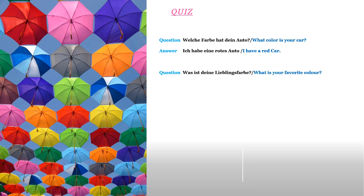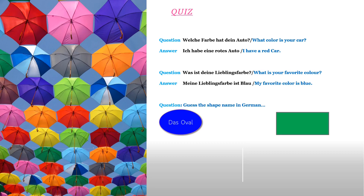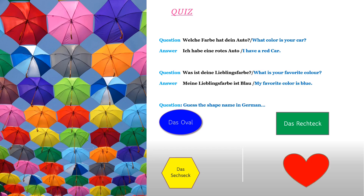Question 2: Was ist deine Lieblingsfarbe? — What is your favorite color? Answer: Meine Lieblingsfarbe ist Blau — My favorite color is blue. Was ist deine Lieblingsfarbe? Question 3: Guess the shape name in German. Das Oval — you are right. Das Rechteck — great. Das Sechseck. Das Herz — good job.